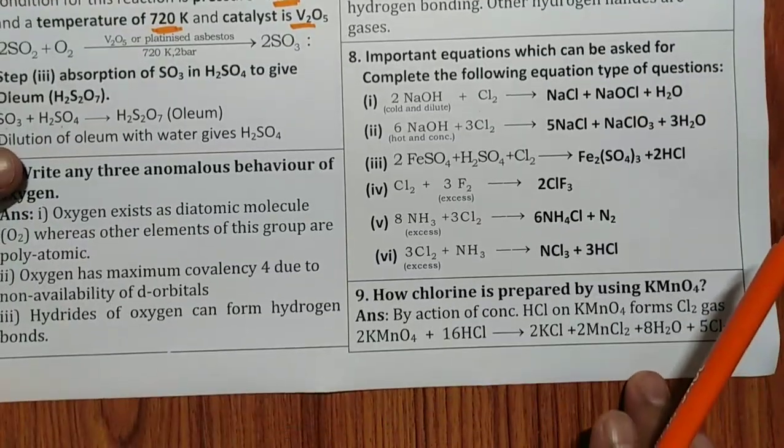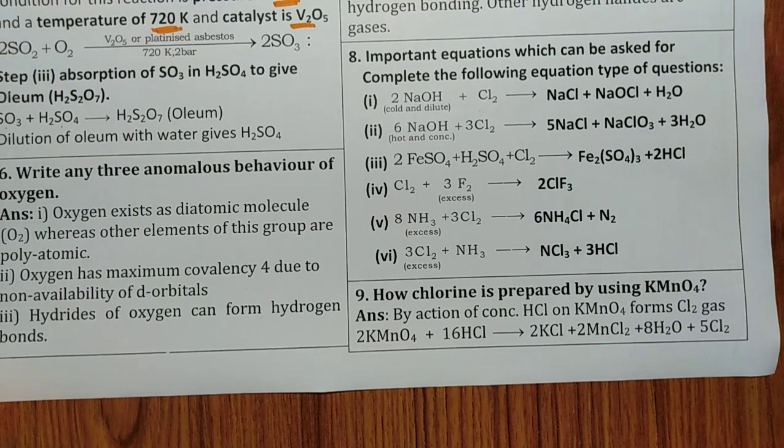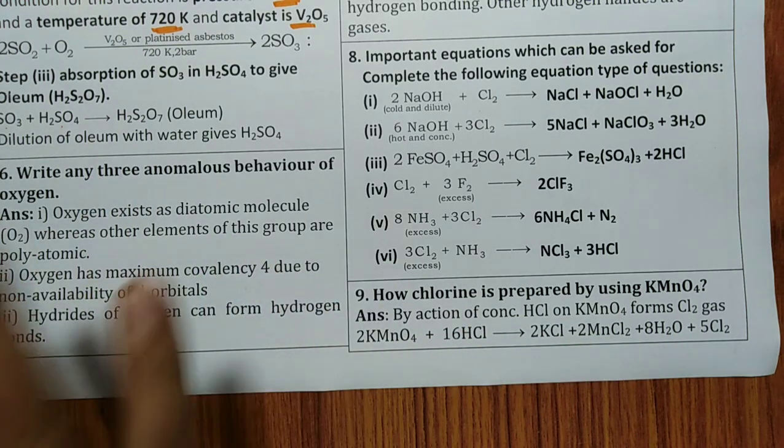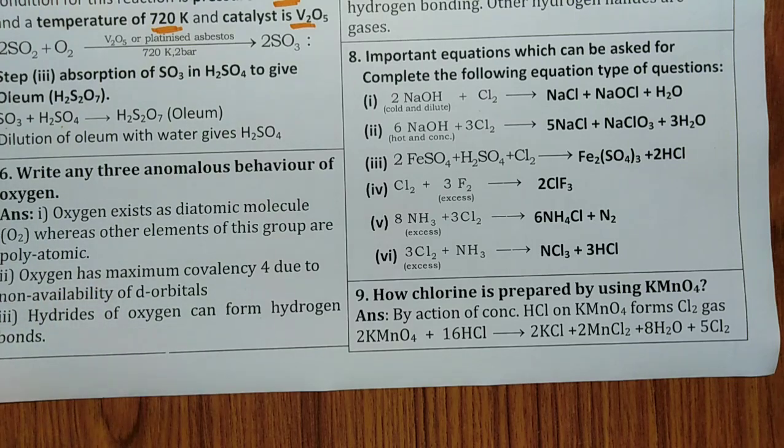How chlorine is prepared by using KMnO4. Chlorine is prepared by action of concentrated HCl on KMnO4 to form Cl2 gas. Very simple. KMnO4 react with HCl to form KCl, MnCl2, H2O, 5Cl2. Generally this question is important for supplementary exam. Practice this. The chances are more. This is third preference. Reactions are important. These theoretical questions you should solve first.